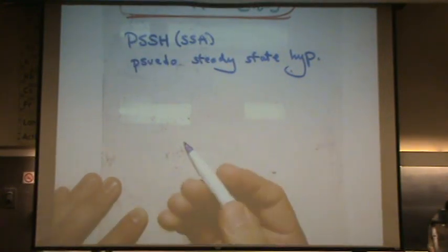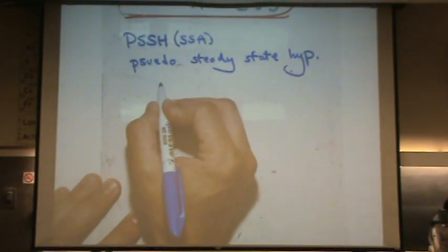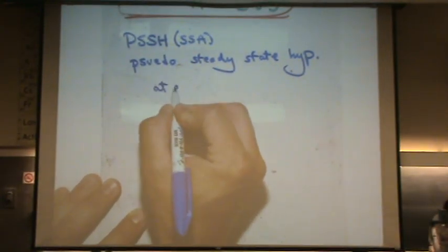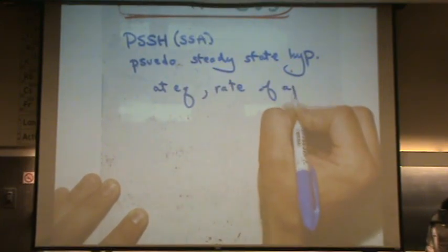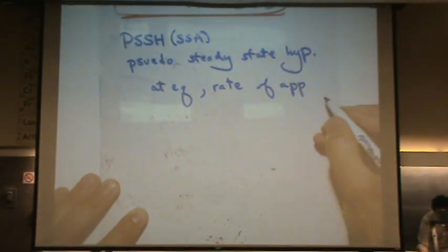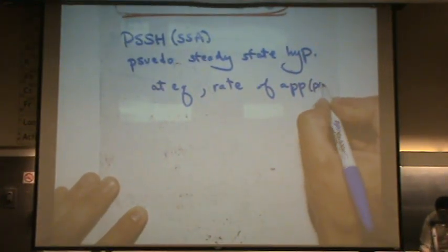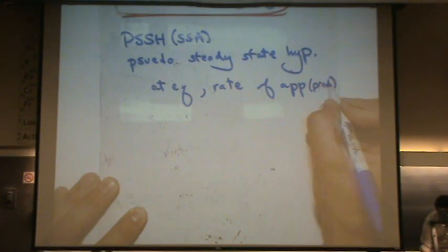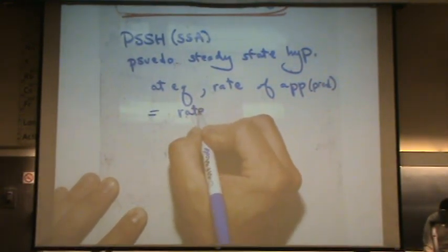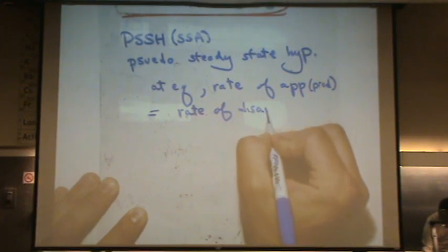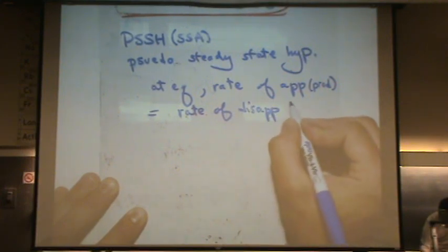And this is what this assumption is. At equilibrium, rate of appearance, which is production, equals rate of disappearance. Rate of appearance equals rate of disappearance. Disappearance means it's in the reactants.